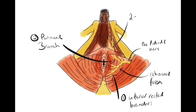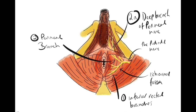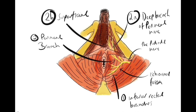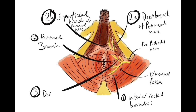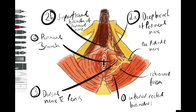The next branch is the perineal branch, which can be further subdivided. Branch 2a is a deep branch which is motor to skeletal muscle in the deep and superficial perineal spaces. Branch 2b is the superficial branch which is sensory, and the largest of those sensory branches goes as the posterior scrotal branch in the male or the posterior labial nerve in the female.